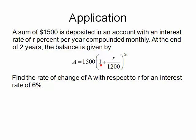At the end of 2 years, the balance is given by the formula A equals 1,500 times the quantity 1 plus r over 1,200, all raised to the 24th. The 24 is there because if we're doing this monthly for 2 years, we're going to compound interest 24 times.